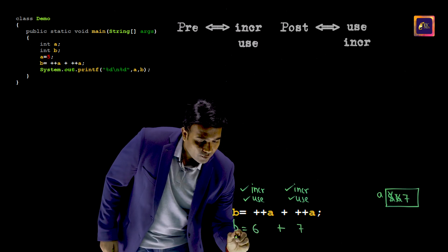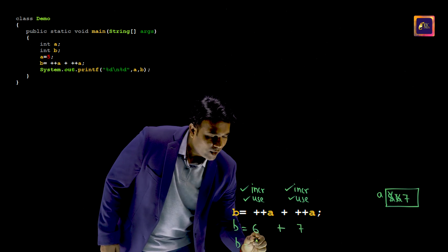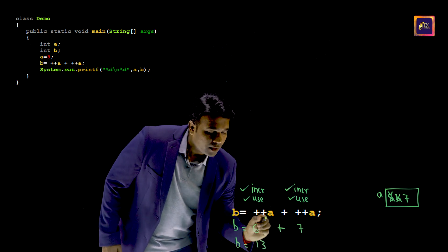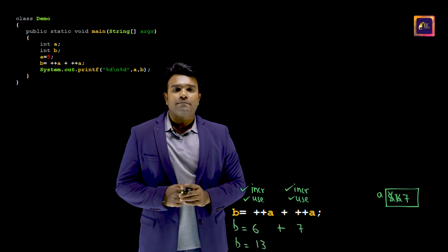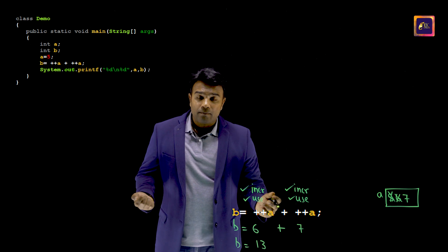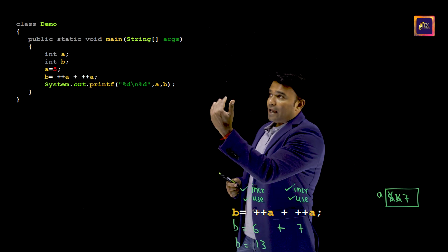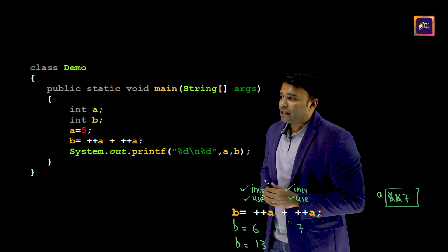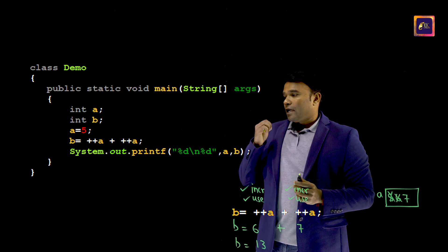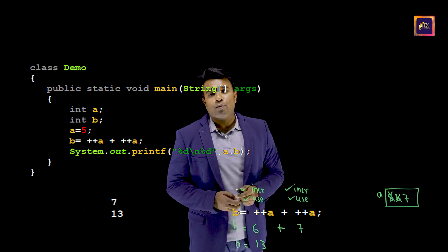So the final value in B happens to be 13. Let's check if it really works. I will call it back and when I execute, this is the output.